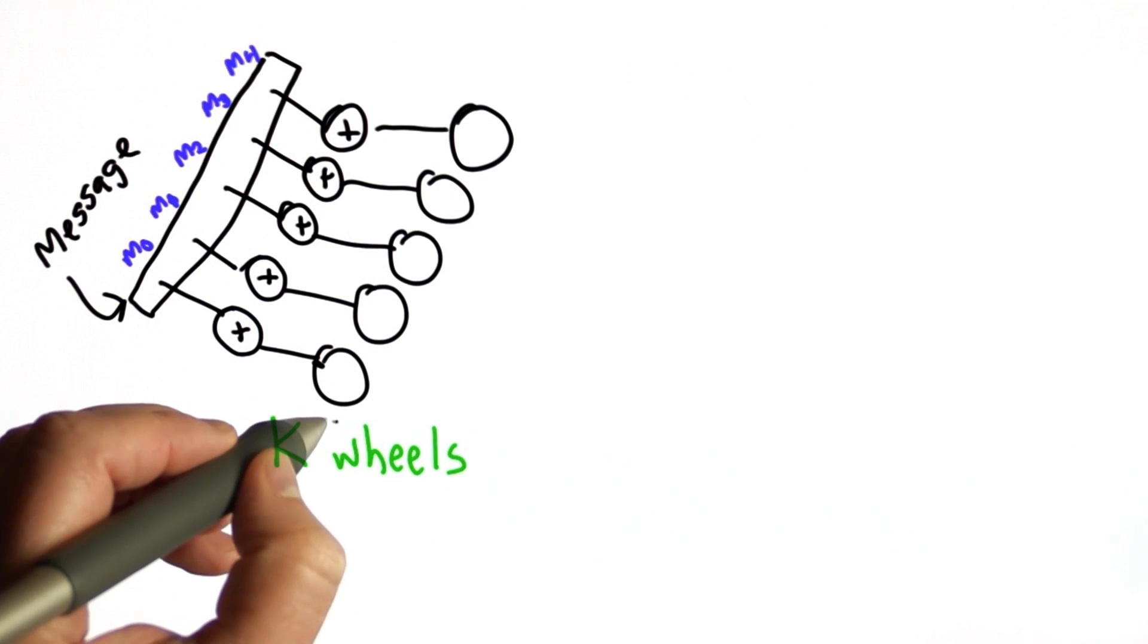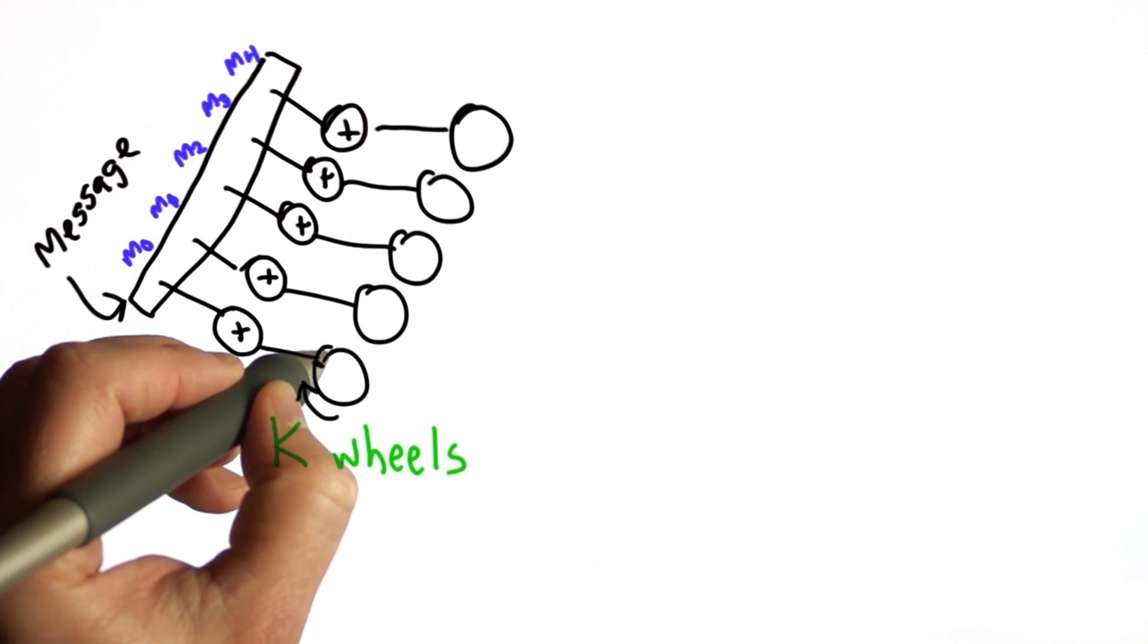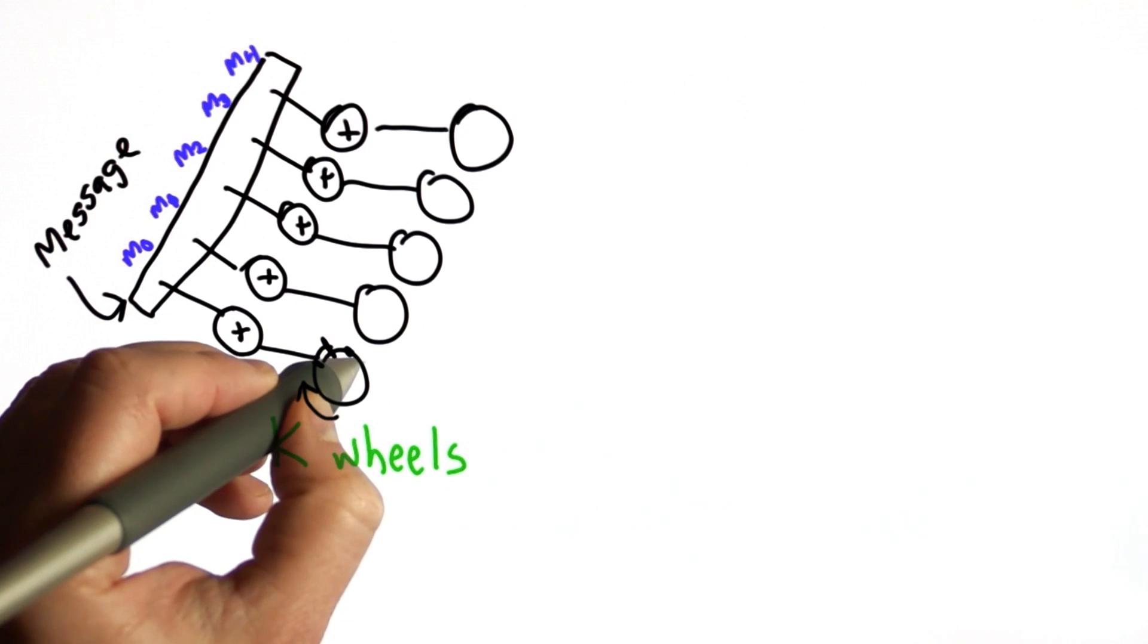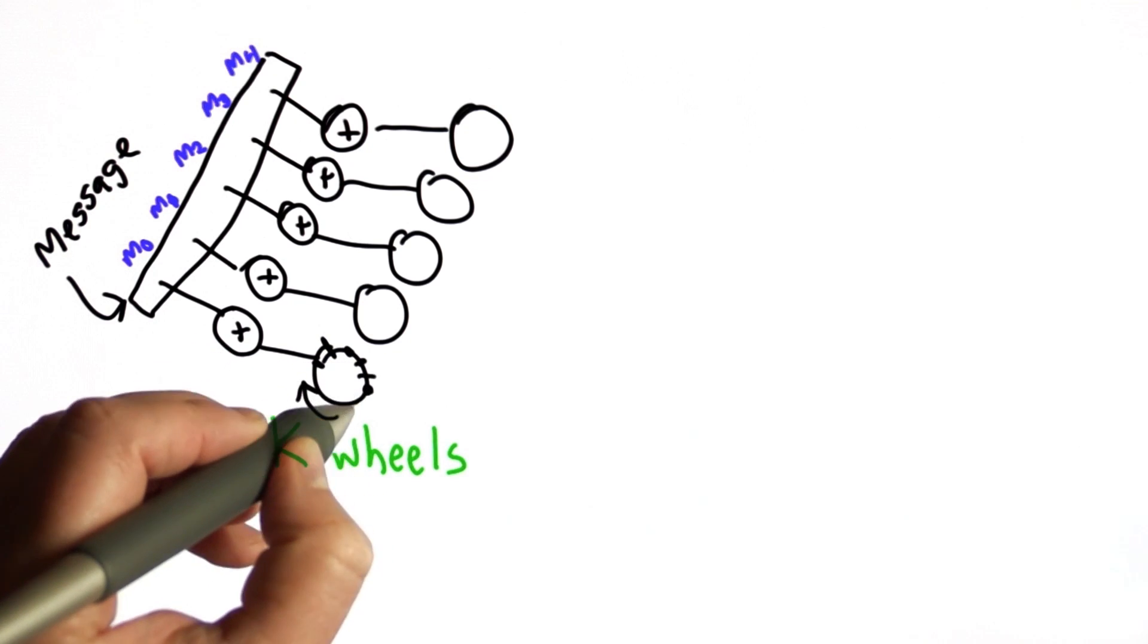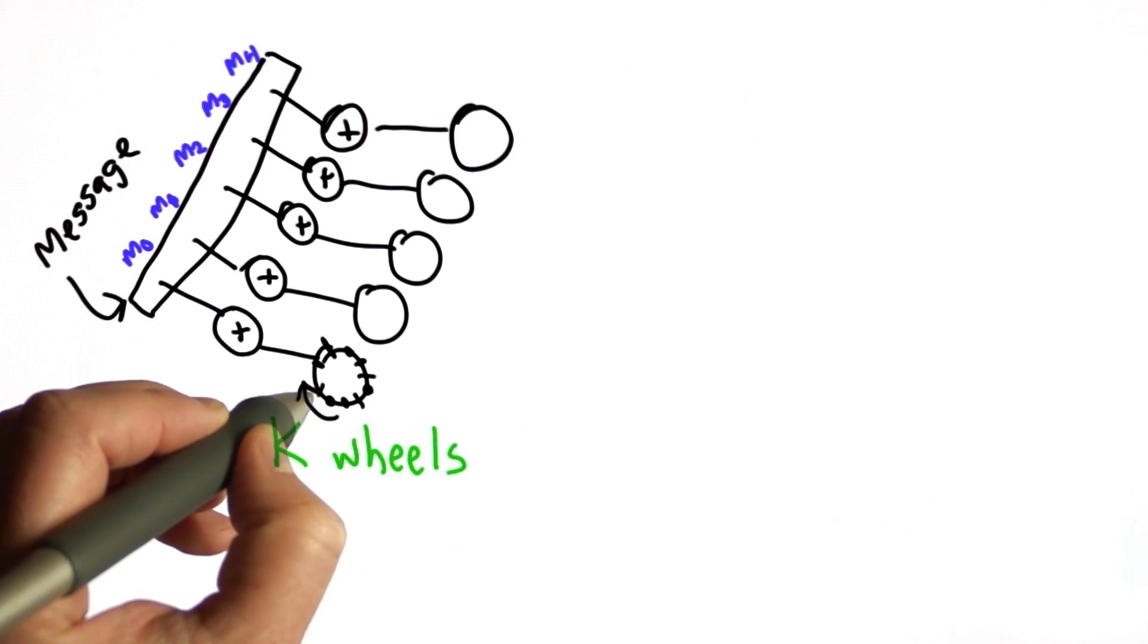These wheels would rotate with each letter. At each position, they either had a 0 or a 1, depending on whether there was a pin in that position or not.